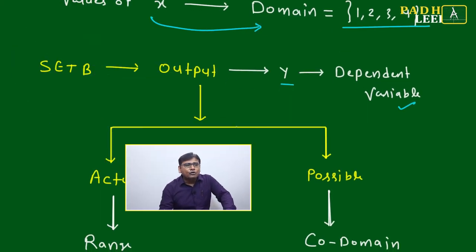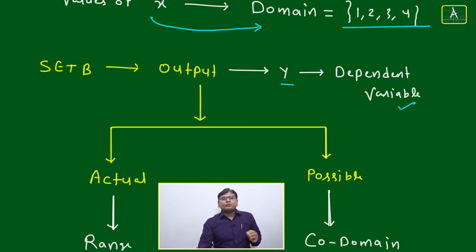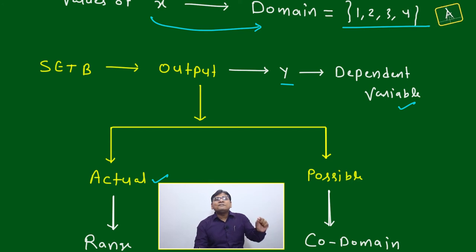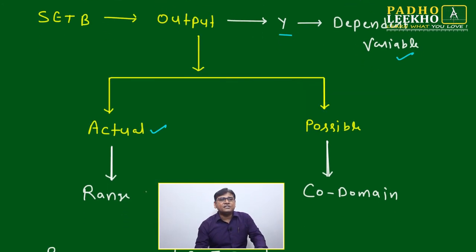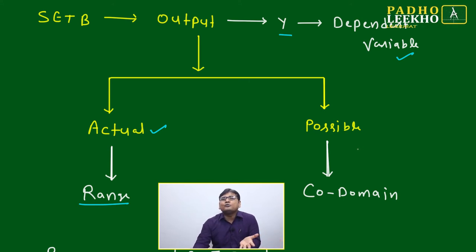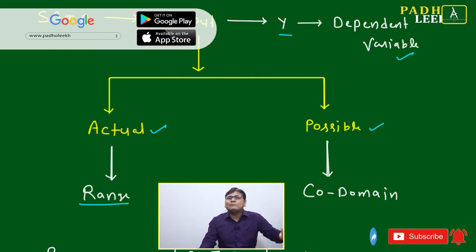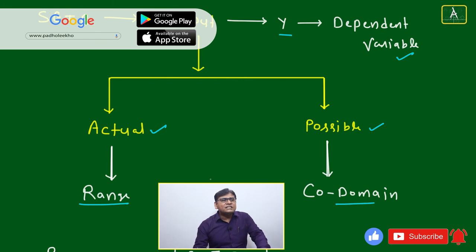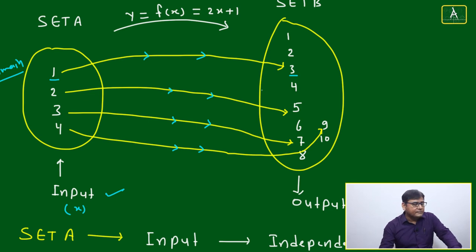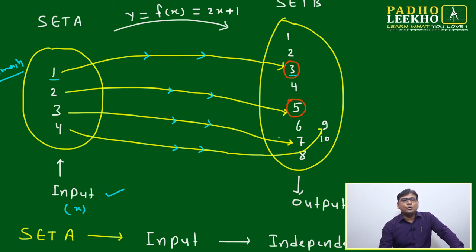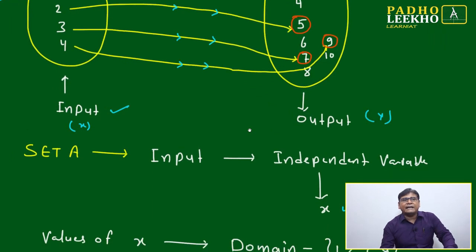Set B is your output, your y, your dependent variable. The output can be two types — that is the key thing to understand. Whatever output is given in set B: if it is the actual output, meaning what is defined based on this function, that is called the range. Apart from the actual output, certain other elements are there that are not included in your actual output — those are possible outputs. The range is the actual output; the co-domain is the possible output.